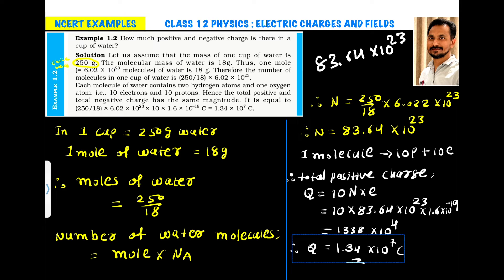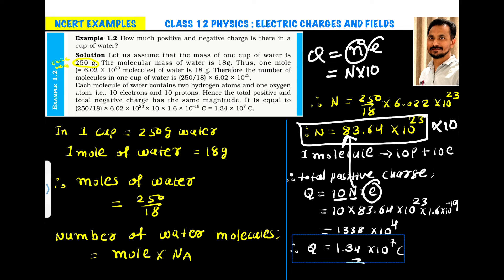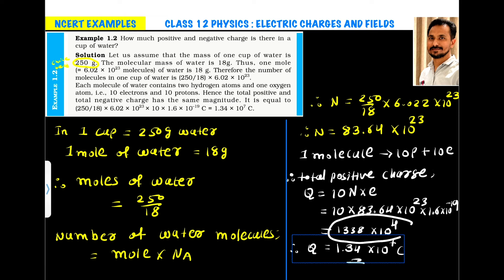We have 83.64 × 10²³ molecules of H₂O, and each molecule contains 10 protons. So the total positive charge Q = (number of molecules) × 10 × e, where e is the charge of one proton. The total number of protons is the total number of molecules times 10. Multiplying by e gives 1338 × 10⁴, which is equivalent to 1.34 × 10⁷ coulombs.